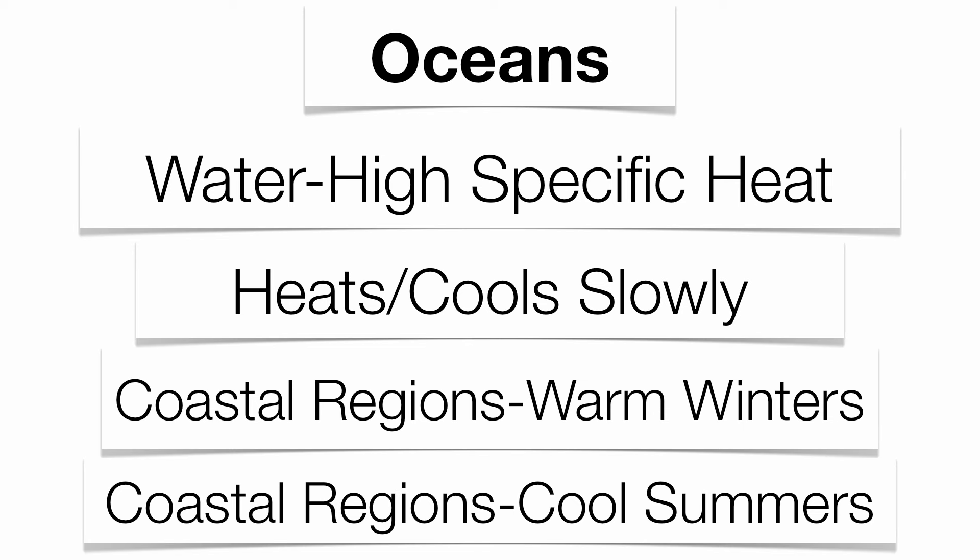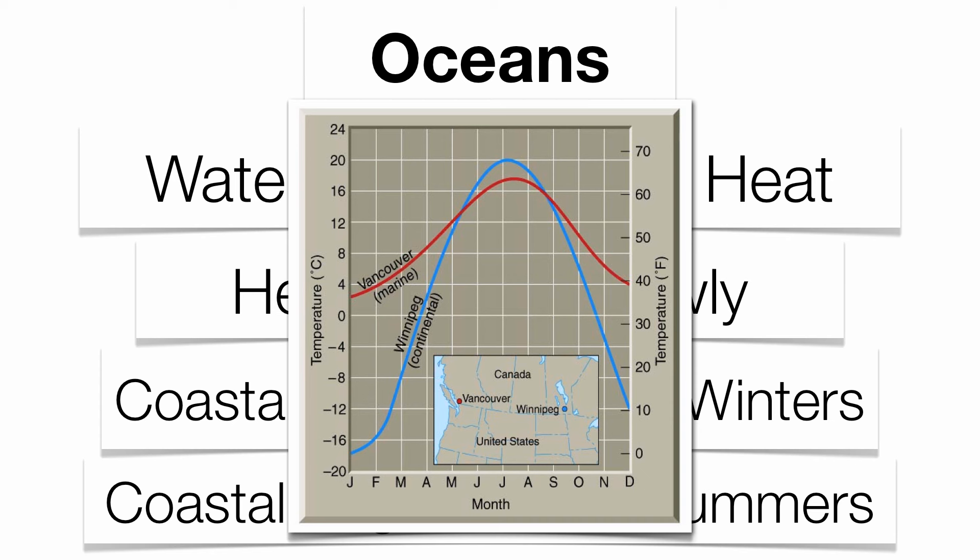Coastal regions are dramatically influenced by the oceans themselves. You can see the difference between Vancouver, which is a coastal city, compared to Winnipeg, which is a more inland or continental city. Vancouver has much warmer winters and a little bit cooler summers compared to Winnipeg, which has very cold winters and relatively warmer summers. The reason Winnipeg has such a big difference in yearly temperature is simply because land has a low specific heat — it heats quickly and cools quickly.